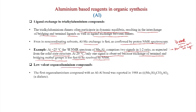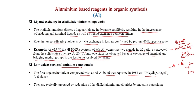Low-valent organoaluminum compounds: the first organoaluminum compound with an Al-Al bond was reported in 1988 as [(Me3Si)2CH]2Al-Al[CH(SiMe3)2]2. These compounds are typically prepared by reduction of dialkylaluminum chlorides with metallic potassium: 2 R2AlCl + 2 K → R2Al-AlR2 + 2 KCl, giving the aluminum-aluminum bonded compound.